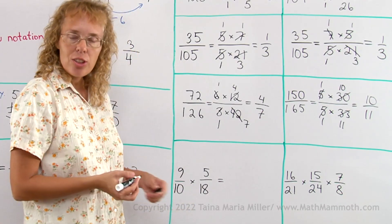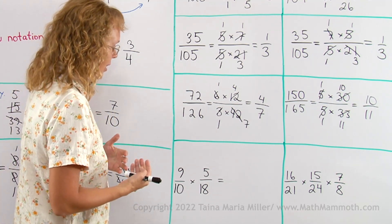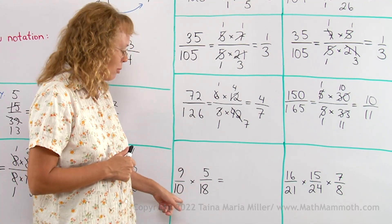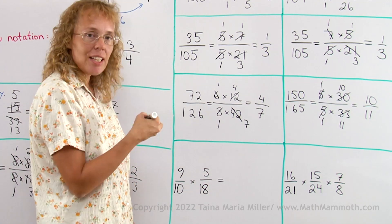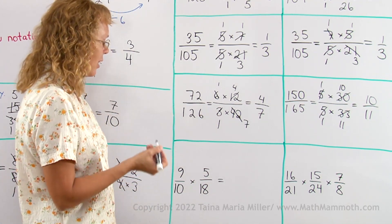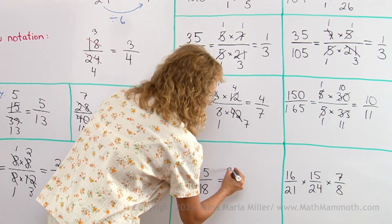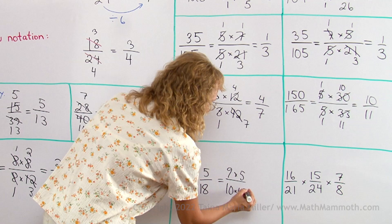Over here this is actually a fraction multiplication problem. But as you know how fractions are multiplied, you multiply the top numbers, you multiply the bottom numbers. So this is the same as 9 times 5 on the top, right? And 10 times 18 on the bottom. I can show you: 9 times 5 on the top and 10 times 18 on the bottom.